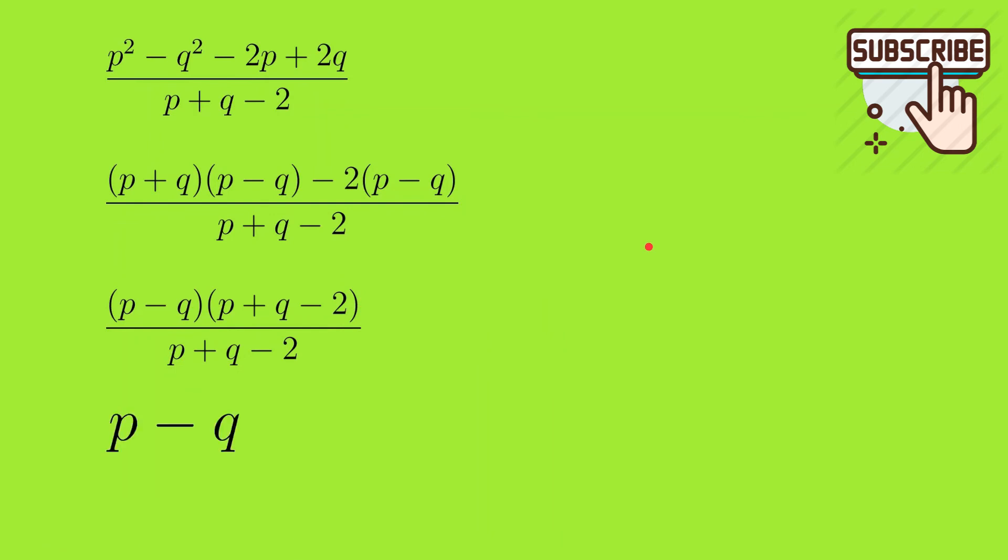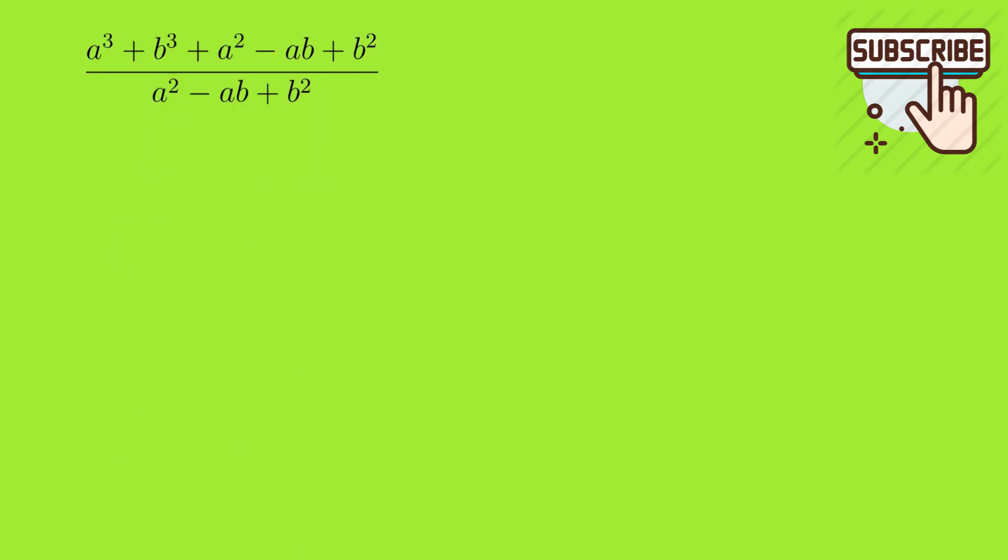Now let's see one more problem. Here we have a cubed plus b cubed plus a squared minus ab plus b squared, divided by a squared minus ab plus b squared. We've already seen how to factorize sum or difference of two cubes. a cubed plus b cubed can be factorized into (a plus b) times (a squared minus ab plus b squared).